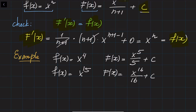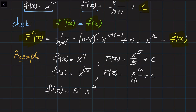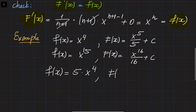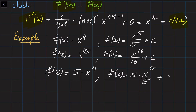What if you are given a constant multiple of a power function? Analogously to what we did with derivatives, the constant can be taken out, and you can simply write the antiderivative as the constant times x to the power of 5 over 5, plus some constant.